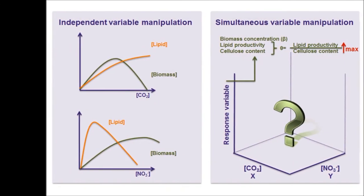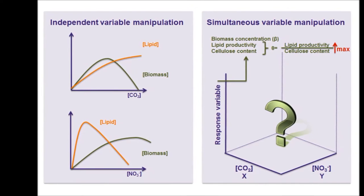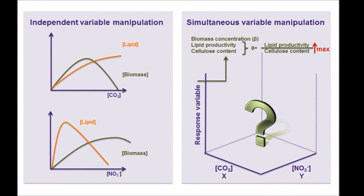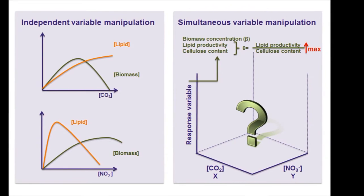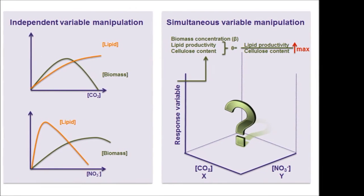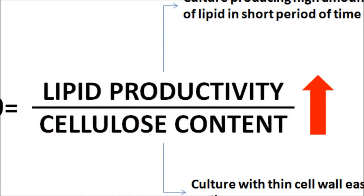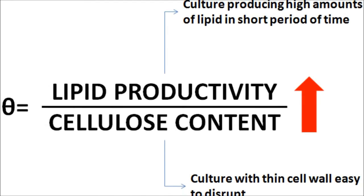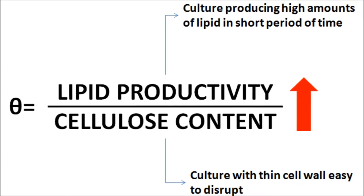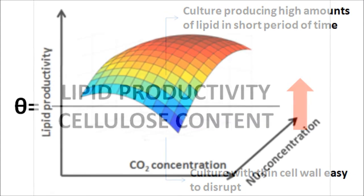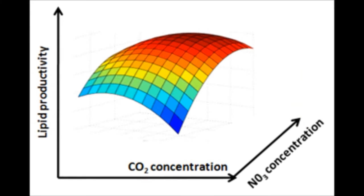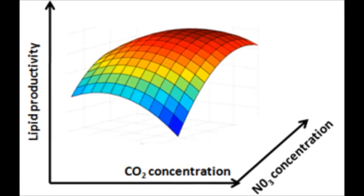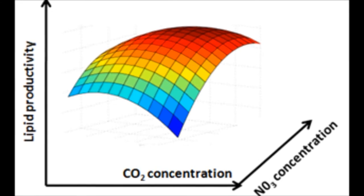In this paper you will find a study on the simultaneous effect of carbon dioxide and sodium nitrate concentrations on Chlorella vulgaris biomass concentration, lipid productivity and cellulose content — the last two by means of the ratio lipid productivity over cellulose content. This ratio is applied as the parameter for optimization, because the ratio between these variables has a more practical meaning than their independent study. Optimization was performed by response surface methodology, leading to optimum points and empirical equations for each parameter.